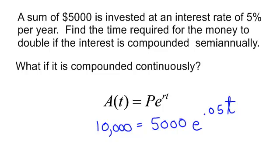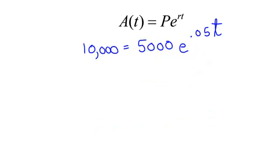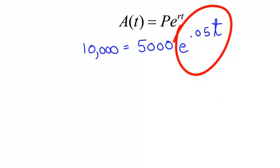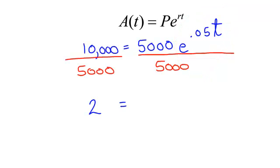Now, why do you think this formula doesn't have an N in it? The other formula, we had an N. That's how many times per year it is compounded. Well, I'm not compounding it semi-annually or quarterly or daily. I am compounding it continuously. Well, let's do a little bit of work. I see the E. I see my variable in the exponent. So, I will take the natural log of both sides. But I need this E to the exponent by itself. So, I will divide both sides by 5,000. I will have 2. And that will equal E to the 0.05T.